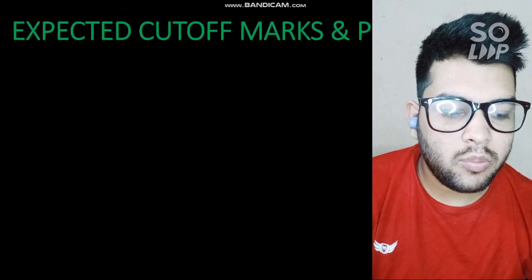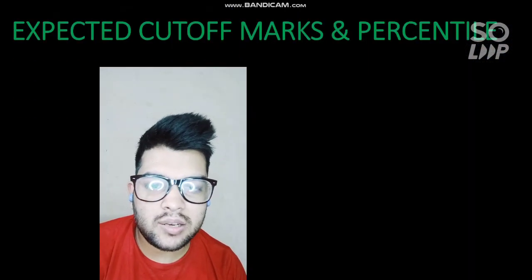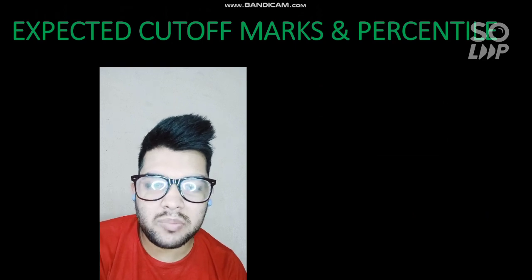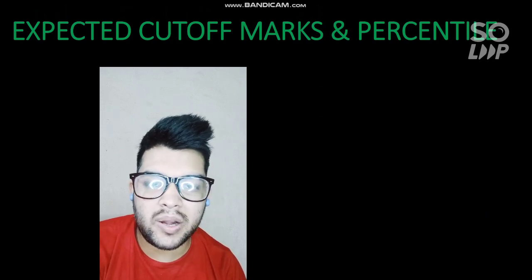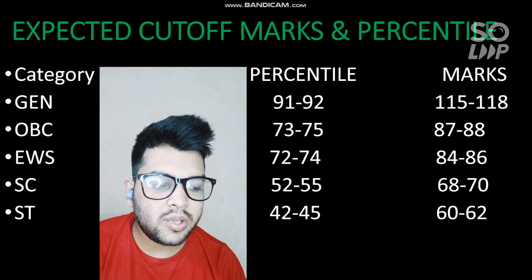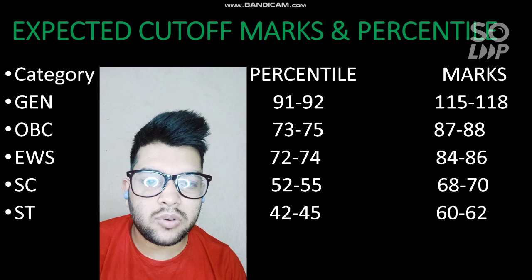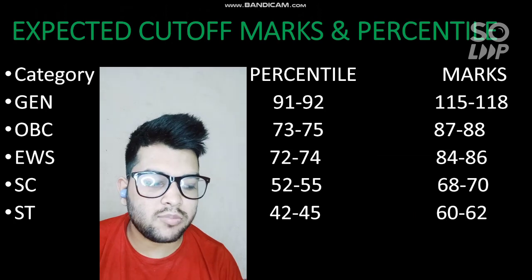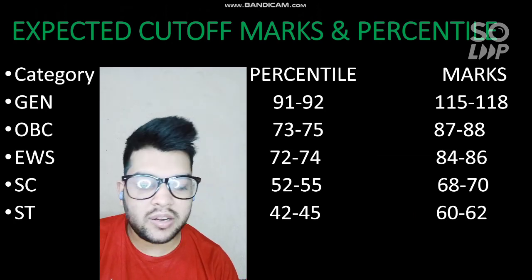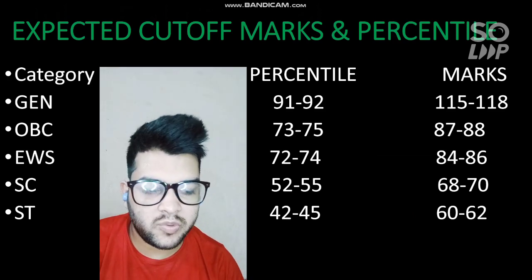Now regarding expected cutoff marks and percentile for the JEE Advanced examination — the percentile will remain the same, but the marks depend on the difficulty level of the paper. For the General category, the expected cutoff is 115 to 118 marks. You can check the remaining categories by pausing this video.